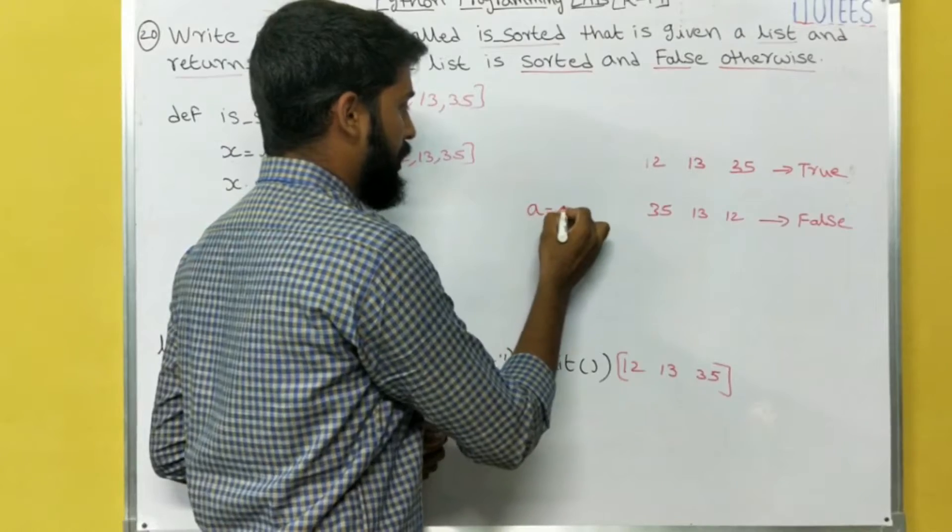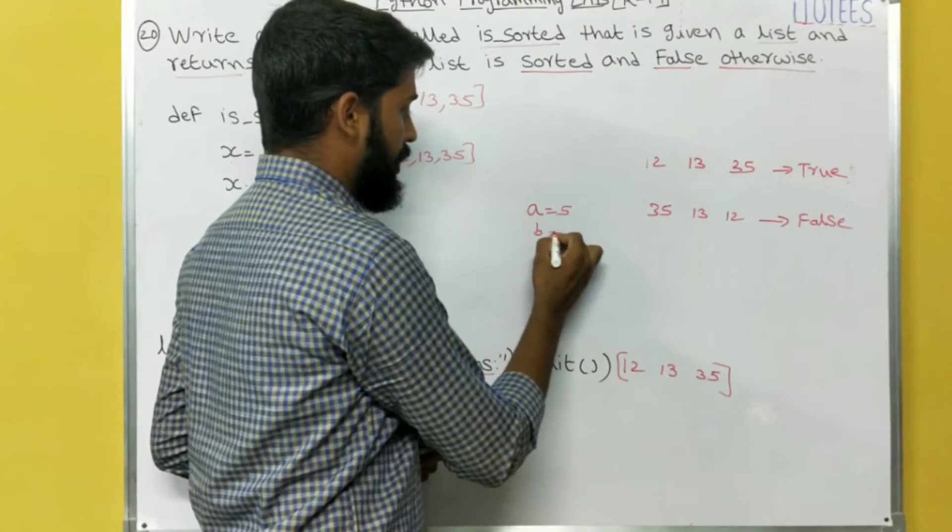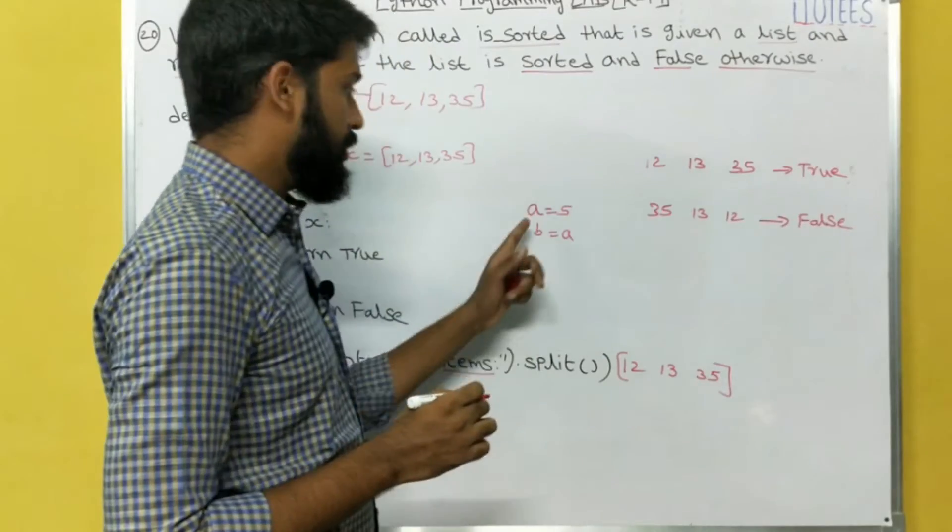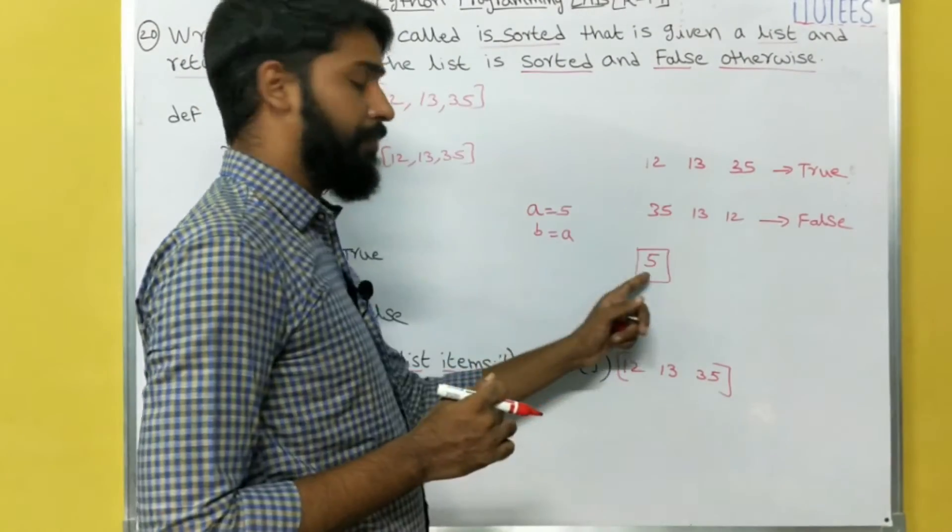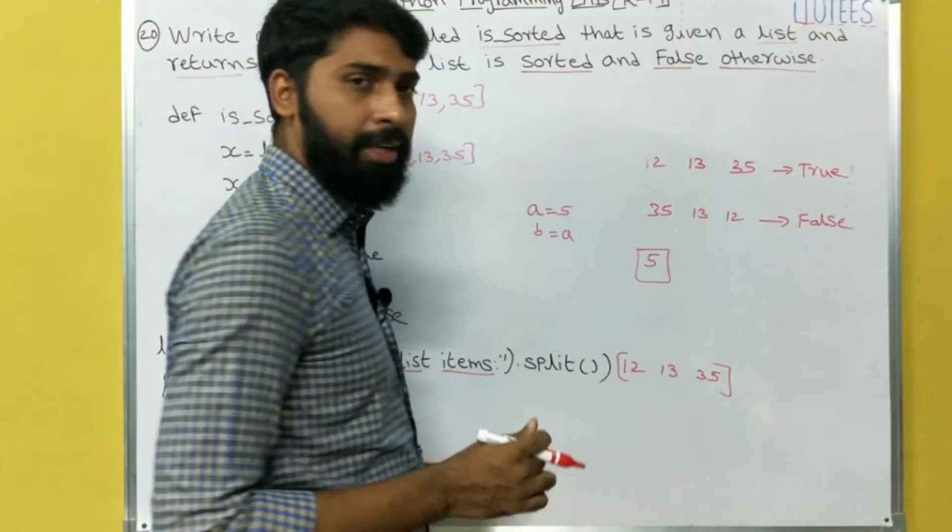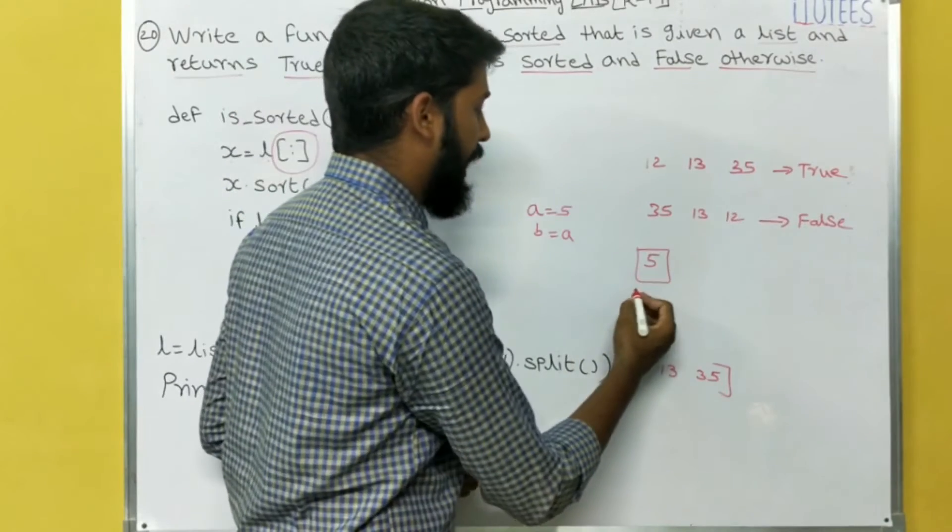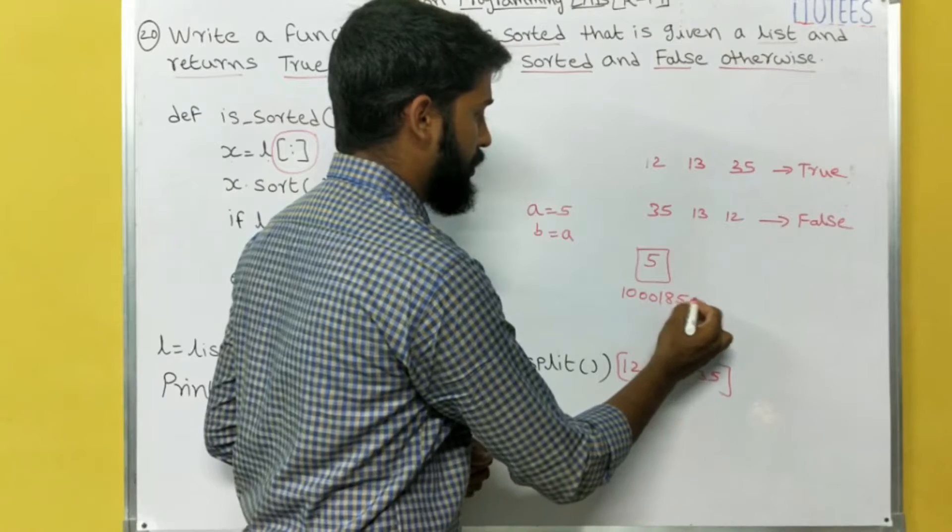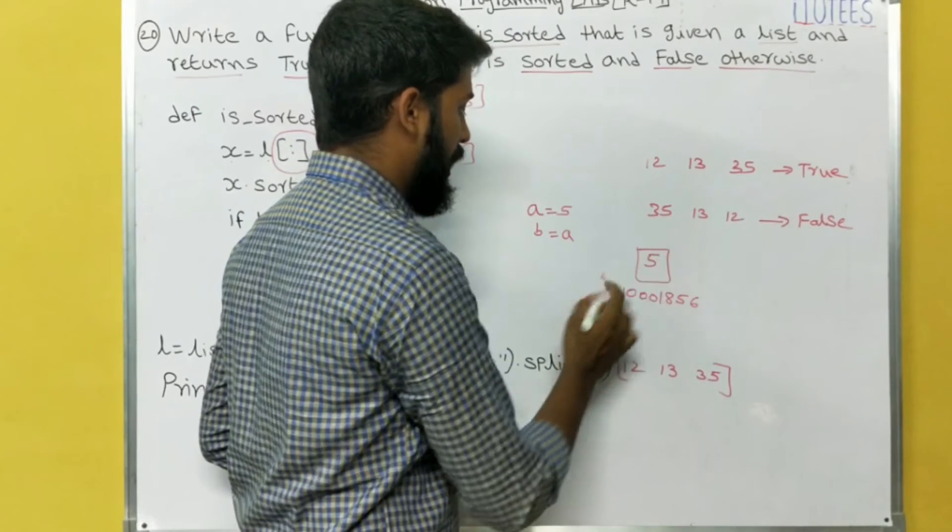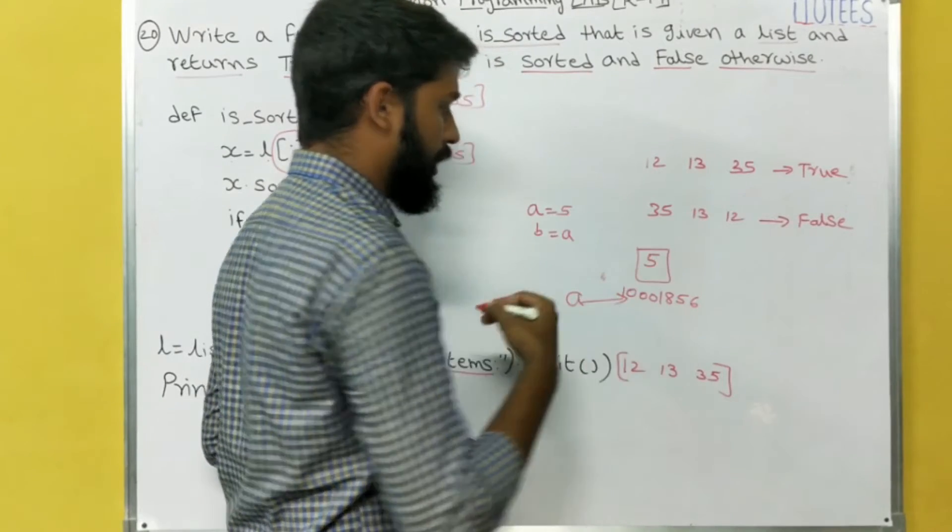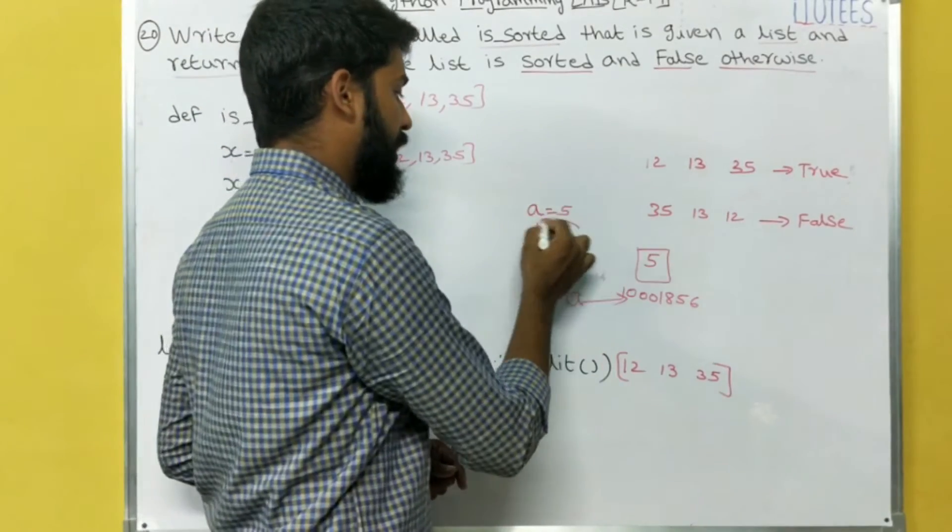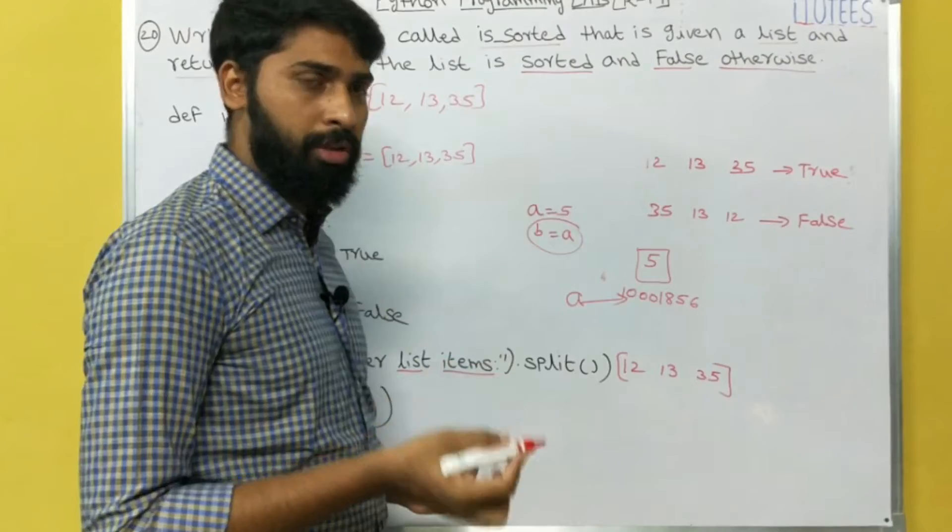So why? For example, A equals to 5, B equals to A. Then, what is A equals to 5 means? The 5 has some identity number. For example, the identity number of 5 is 1001856, and A is indicating to 1001856. If I am creating a variable B equals to A, that means for the B...